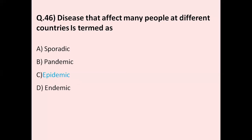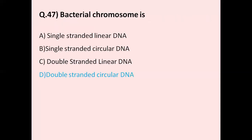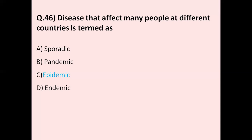Question number 46: Disease that affects many people at different countries is termed as — option A sporadic, option B pandemic, option C epidemic, option D endemic. The correct answer is epidemic. Epidemic disease refers to the rapid spread of disease to a large number of people within a region, community, or population. Examples of epidemic diseases include measles, cholera, dengue, etc.